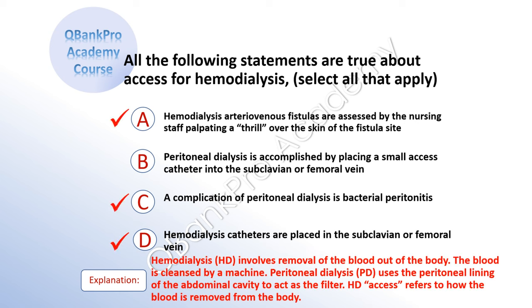The correct answer is A: hemodialysis arterial venous fistulas are assessed by the nursing staff palpating a thrill over the skin of the fistula. C: a complication of peritoneal dialysis is bacterial peritonitis. And D: hemodialysis catheters are placed in the subclavian or femoral vein. Explanation: Hemodialysis involves removal of the blood out of the body; the blood is cleansed by a machine. Peritoneal dialysis uses the peritoneal lining of the abdominal cavity to act as a filter. Hemodialysis access refers to how the blood is removed from the body.